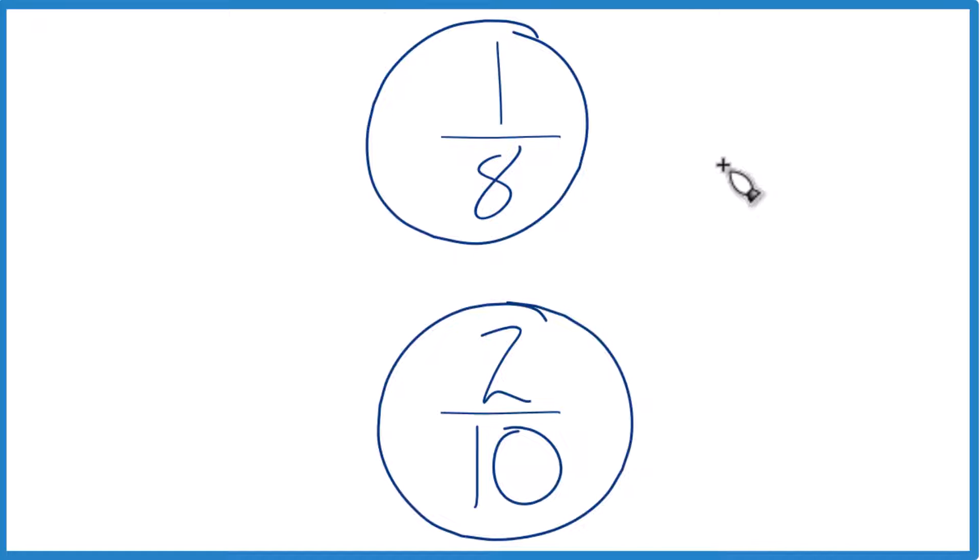To do that we could just divide 1 by 8 in a calculator, 2 by 10 in a calculator, and you'd see the decimals there and you could just compare them. Figure out if 1/8 is larger than, equal to, or less than 2/10.